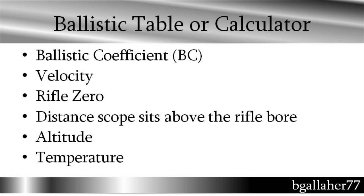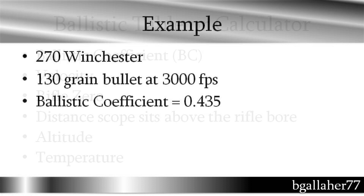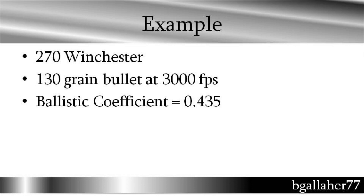An example would be my hunting load: 270 Winchester, 130 grain bullet, measured at 3,000 feet per second give or take, and a ballistic coefficient of 0.435.